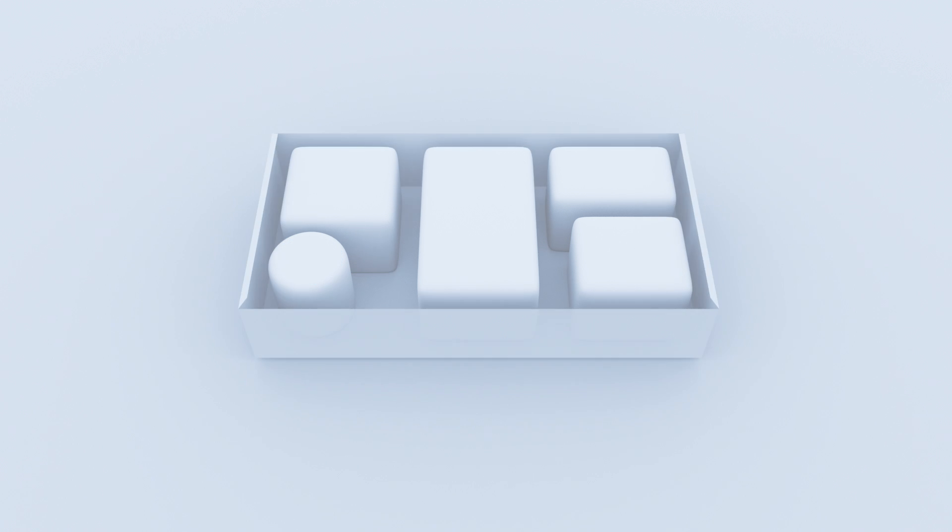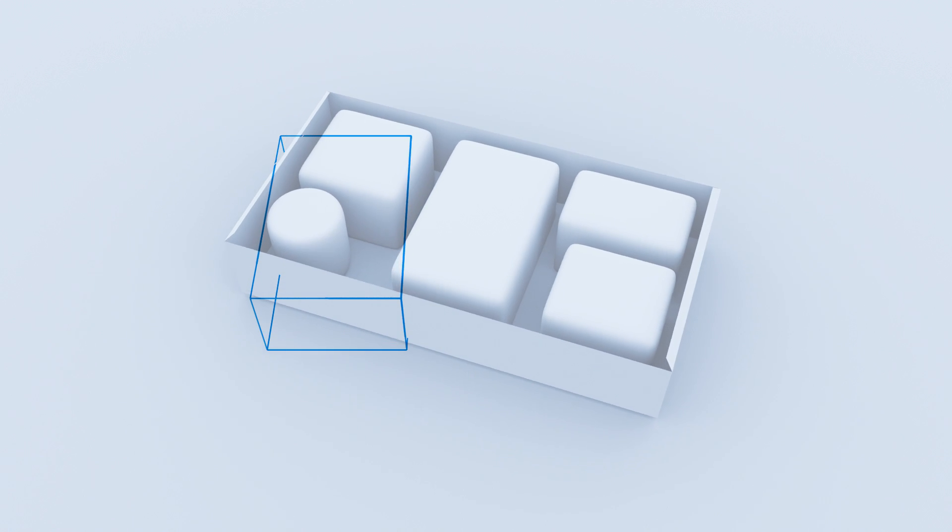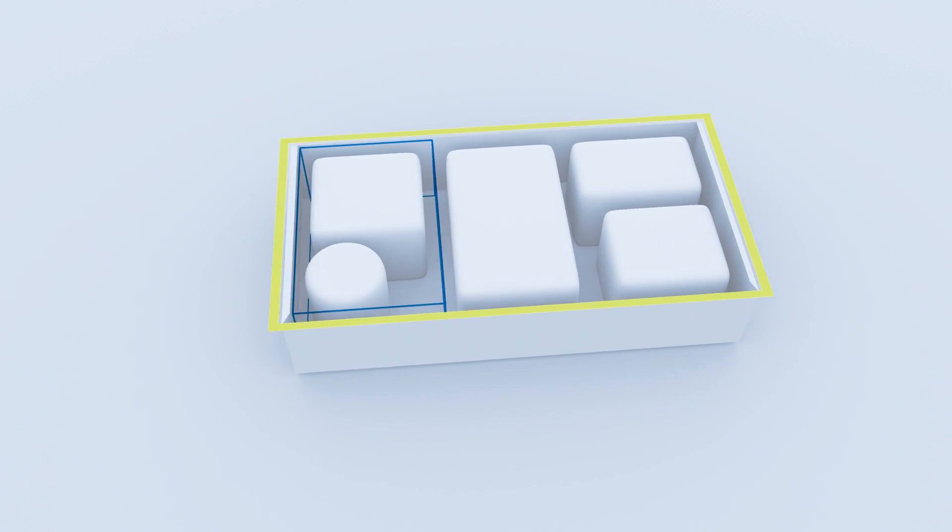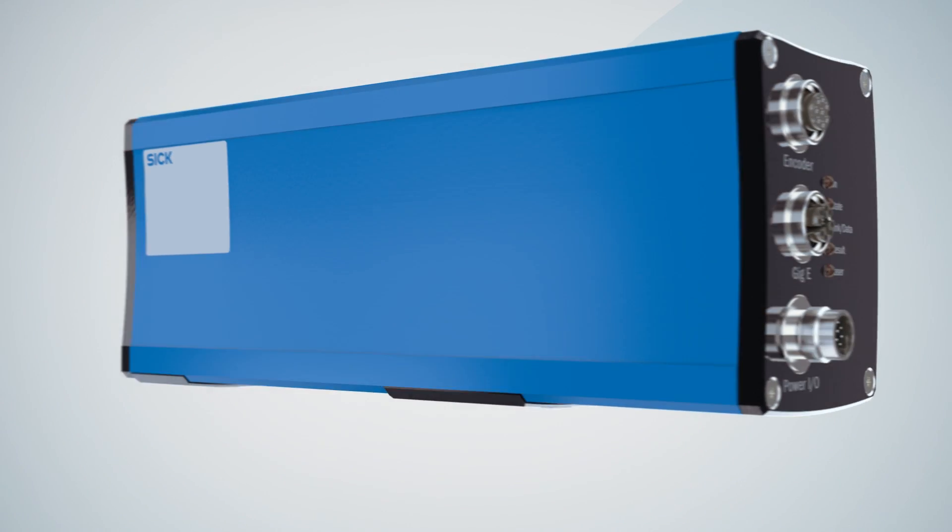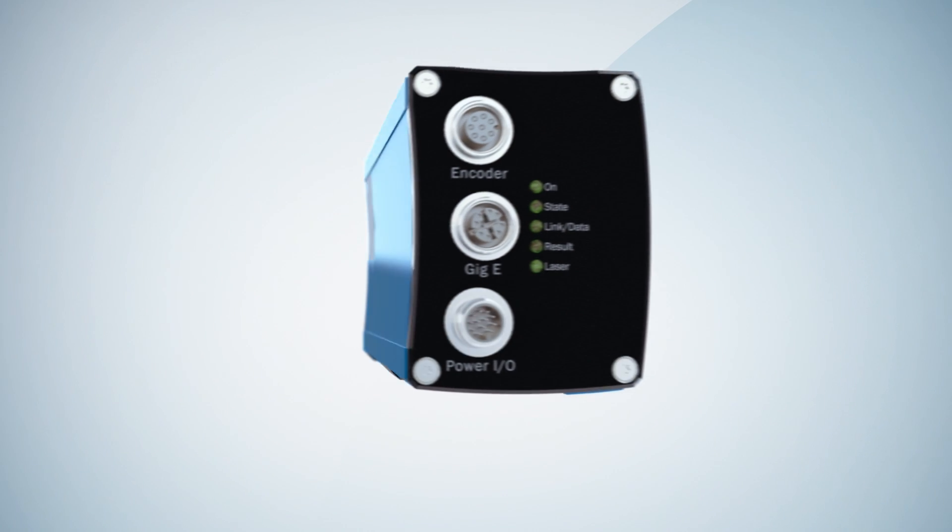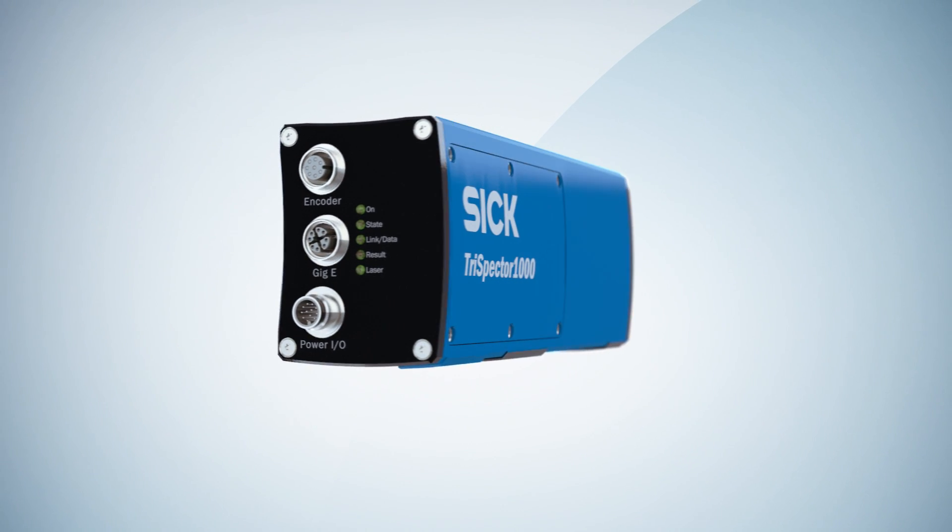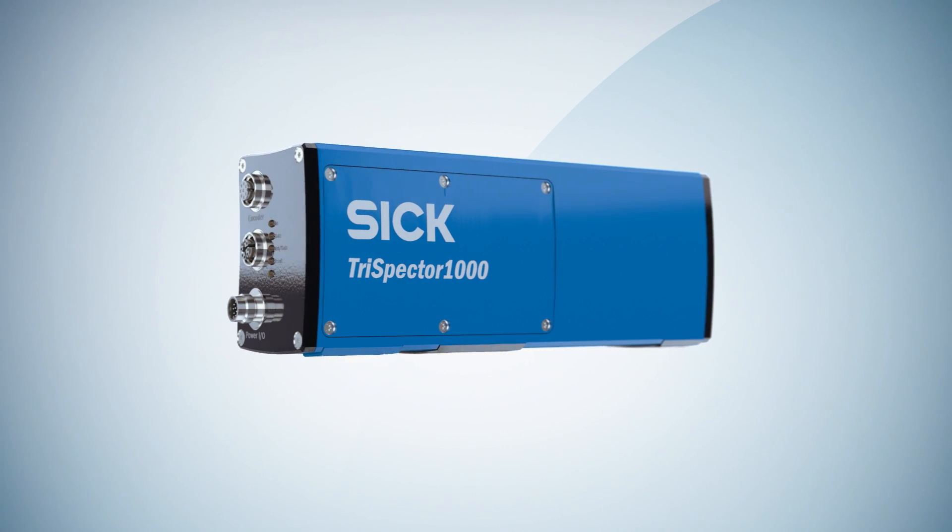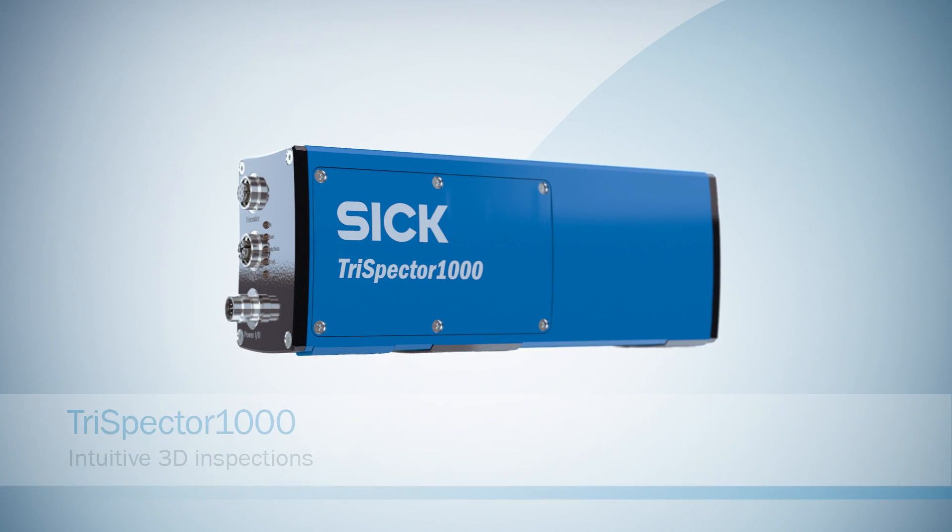Everything while the TriSpector 1000 keeps track of movement and repositions the inspections in real time. In short, TriSpector 1000 is an easy to use high quality 3D sensor that combined with worldwide first-class service from SICK delivers the reliability you need.